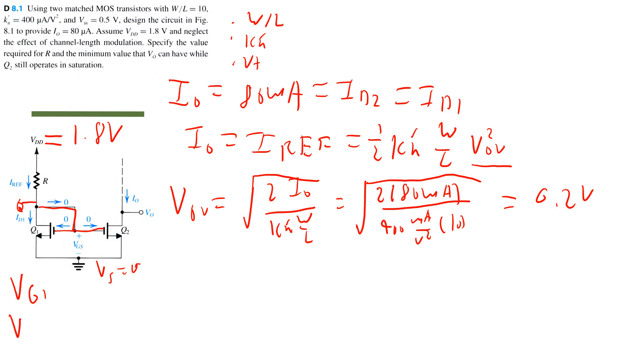So let's try to solve for VGS. We know that VGS is equal to VT plus V overdrive, which I just happened to solve for. So that's equal to 0.5 volts plus 0.2 volts or 0.7 volts.